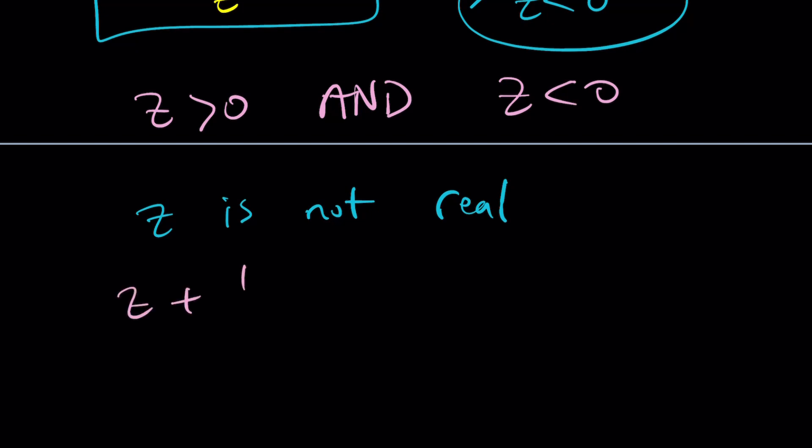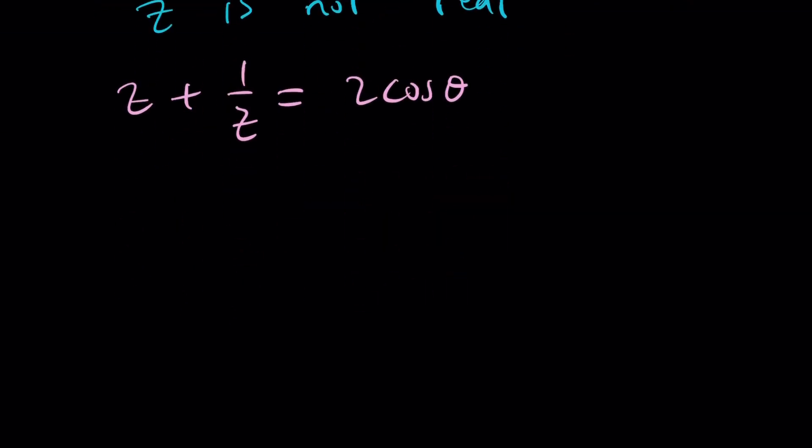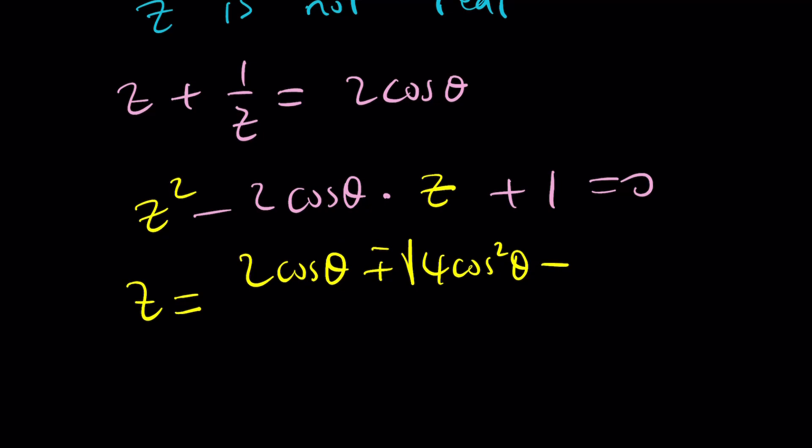Now, we have z plus one over z equals two cosine theta. Now, if you try to solve this using the quadratic formula, you get z squared minus two cosine theta multiplied by z plus one equals zero. Notice that this is quadratic in z. You can use the quadratic formula, which is negative b plus minus the square root of b squared, which is four cosine squared theta minus 4ac, which is four.